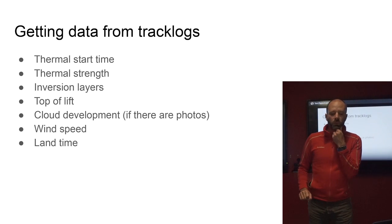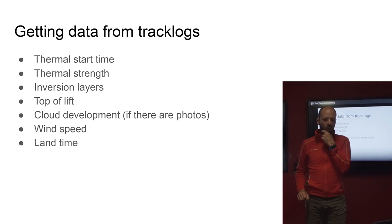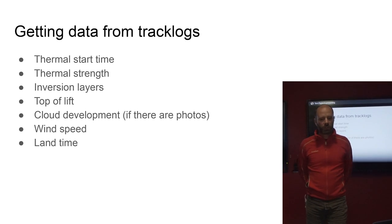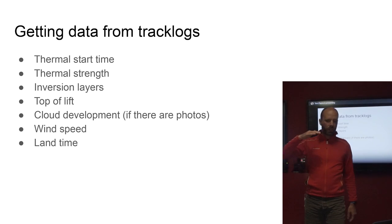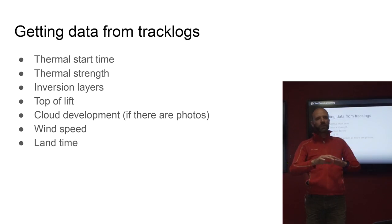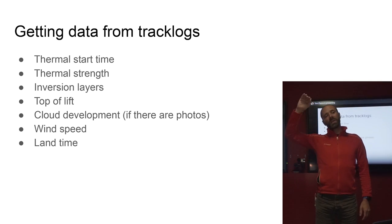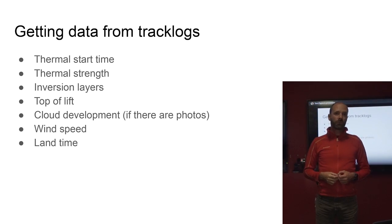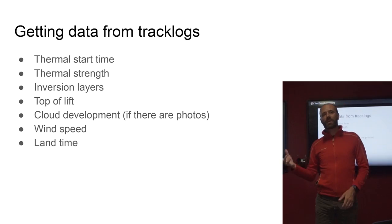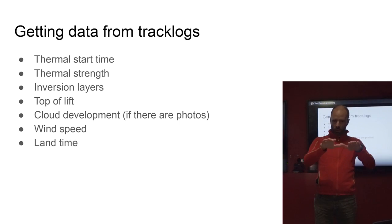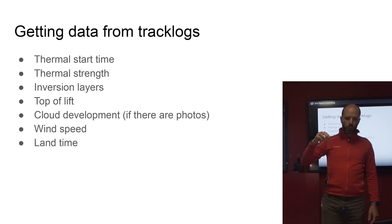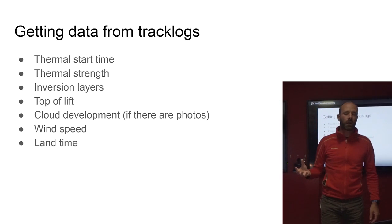A great resource is getting data from X-Contest. There's so much information in a paragliding track log about the weather on the day — from thermal start time to how high pilots get, what time of day they get high. You can look at whether pilots are scratching close to the ground, bouncing off inversions. If people have posted photos, you'll see the cloud development, whether there were storms, how big the overdevelopment got, inversion layers visible, wind drift, and of course how long they got to fly.